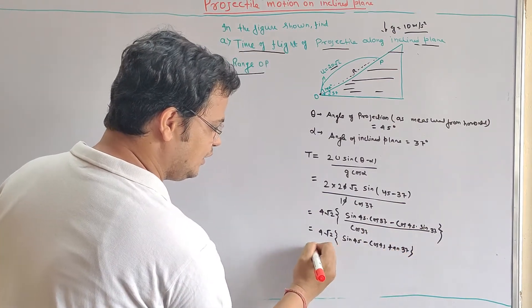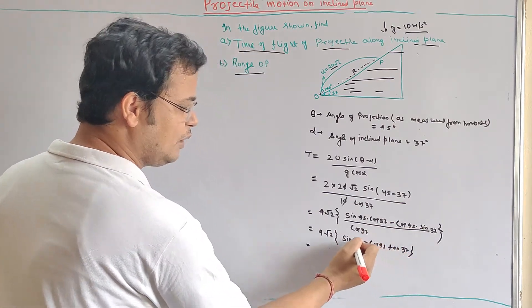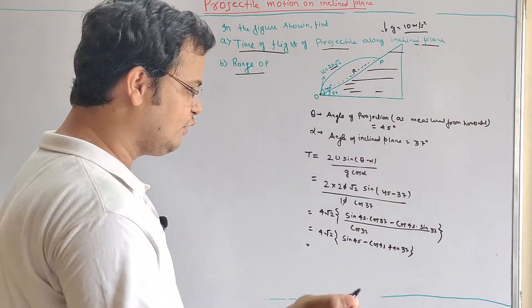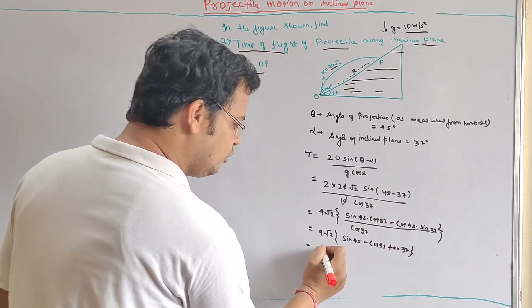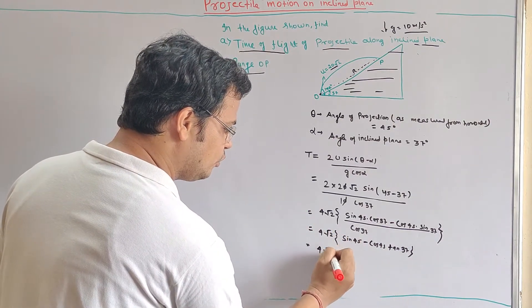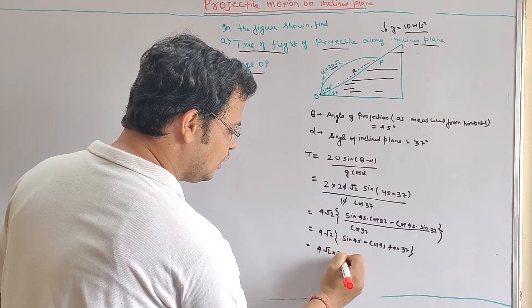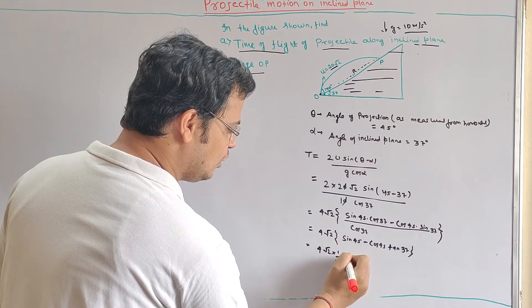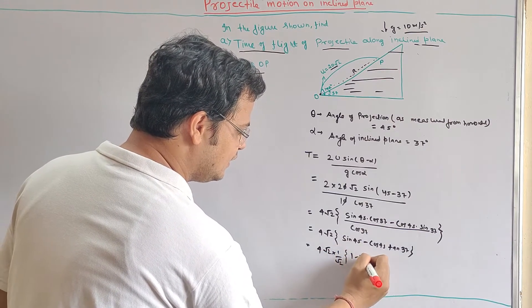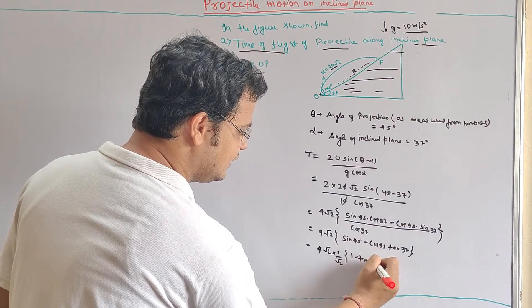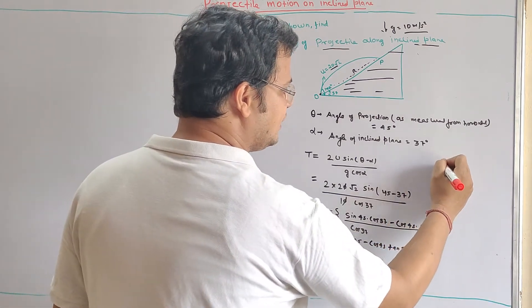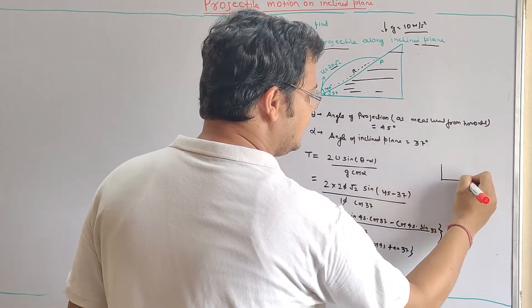Since sine 45 is 1 by root 2 and cos 45 is 1 by root 2, this becomes 4 root 2 into 1 by root 2, giving us 4 into (1 minus tan 37 degrees). Using the sine ratio, the time of flight evaluates to approximately 1 second.